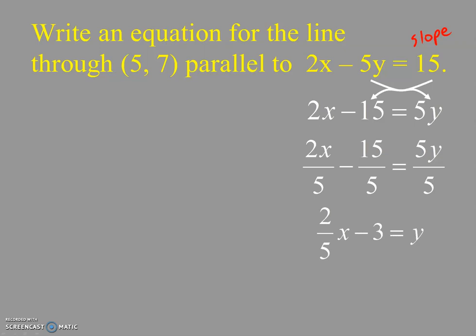Now notice I moved the 5y to the right where it became positive. If you had left it on the left, you would have had to divide by negative 5 in that second step. At the end of it, I have my slope which is 2/5. I'm using the letter m for slope. Now the equation I'm looking for has to have a slope of 2/5, and it's got to pass through (5, 7).